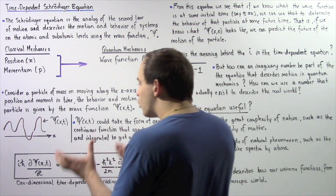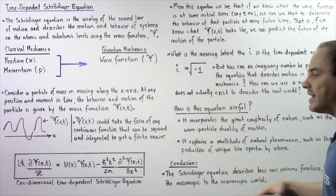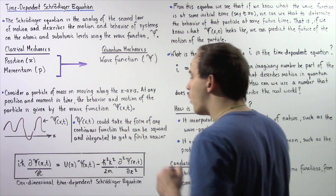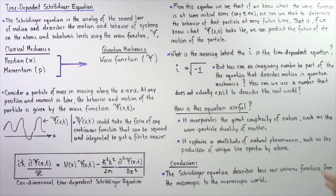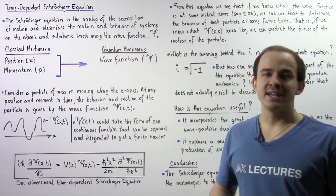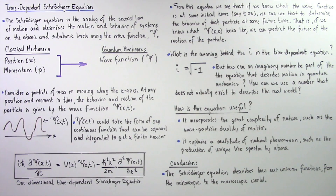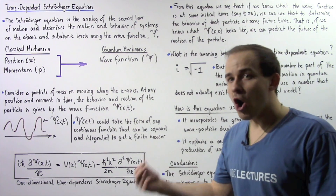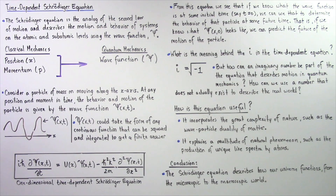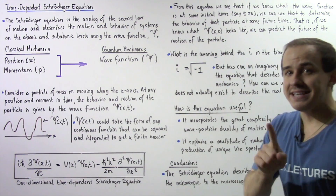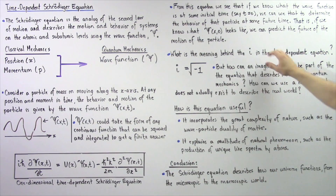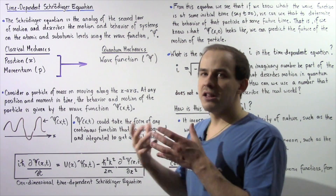Now, what exactly does this equation actually tell us about the wave function? What information can we extrapolate from this equation about the wave function of our particle moving in quantum mechanics? From this equation we see that if we know what the wave function is at some initial moment in time — let's suppose at a time of t equals zero seconds — we can use that initial condition to determine the behavior of our particle at some future time. That is, if we know what ψ(x, 0) is, where zero is our time equaling zero seconds,